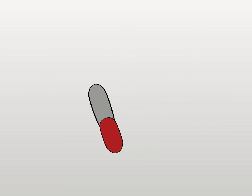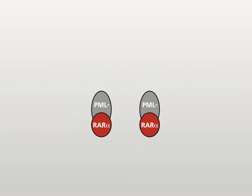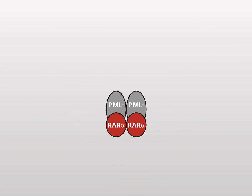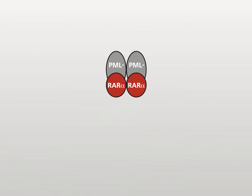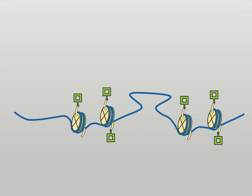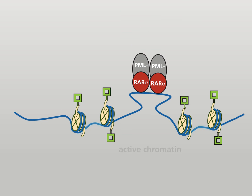The coiled coil and the N-terminal domains of the PML protein mediate oligomerization. The retinoic acid receptor alpha portion of the fusion protein binds to widely spaced direct repeat sequences, in addition to typical retinoic acid receptor binding sites of the DNA.